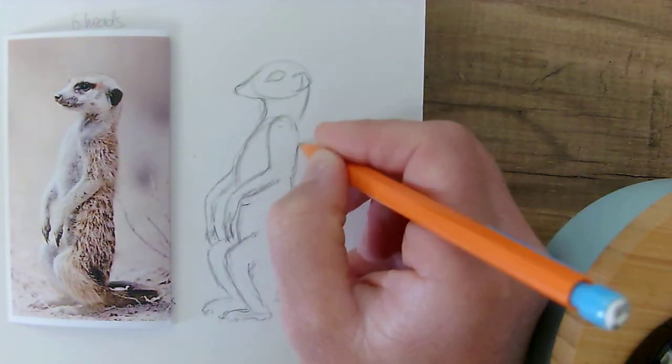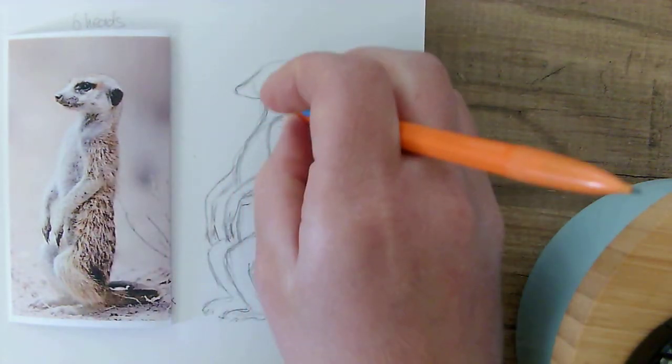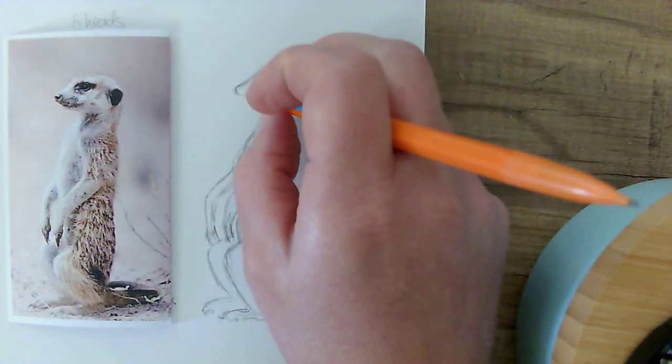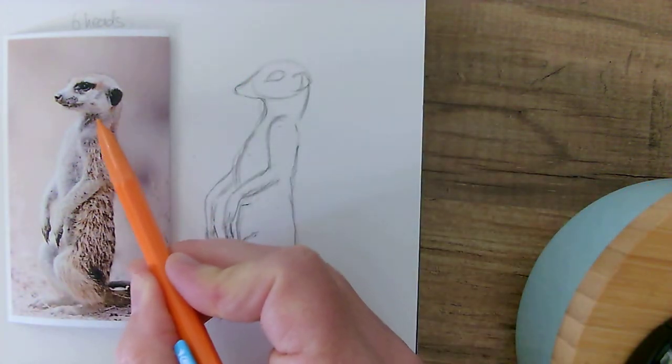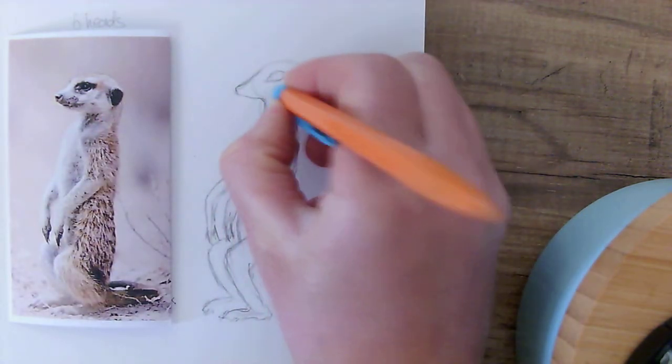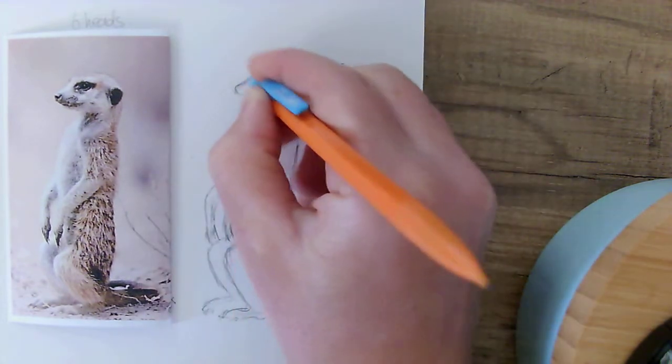Around here in the shoulder area as well, and just here on the chest. He's got a little bit of a line you can see here, so I can keep a slight bit of line.